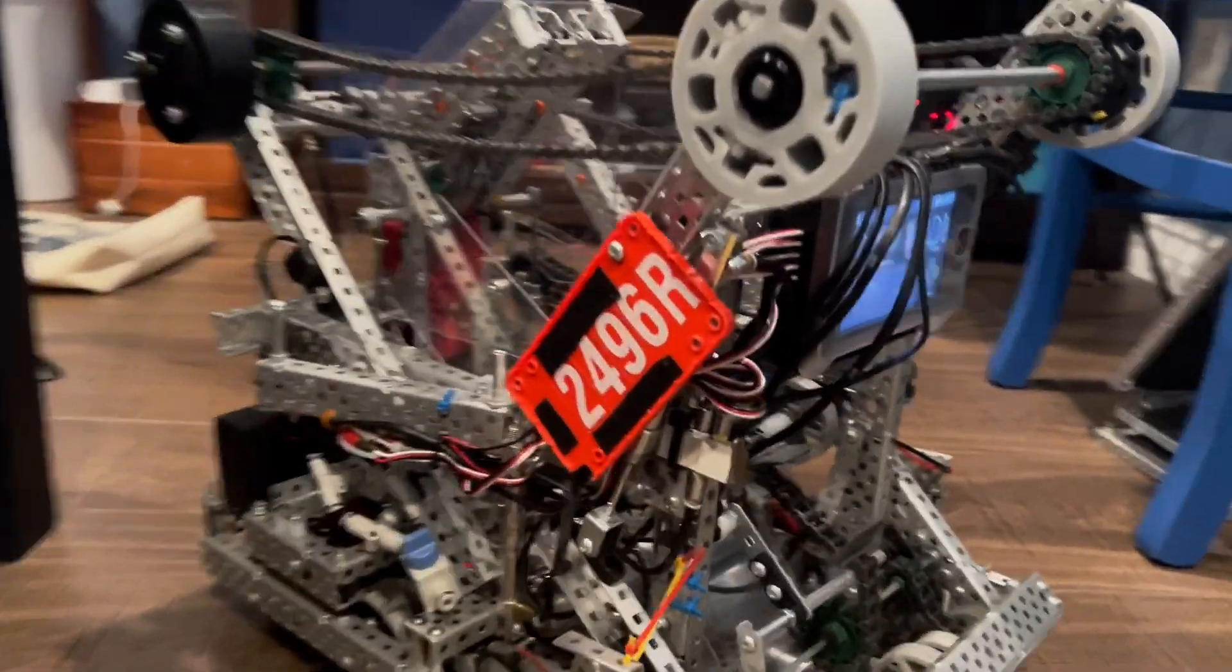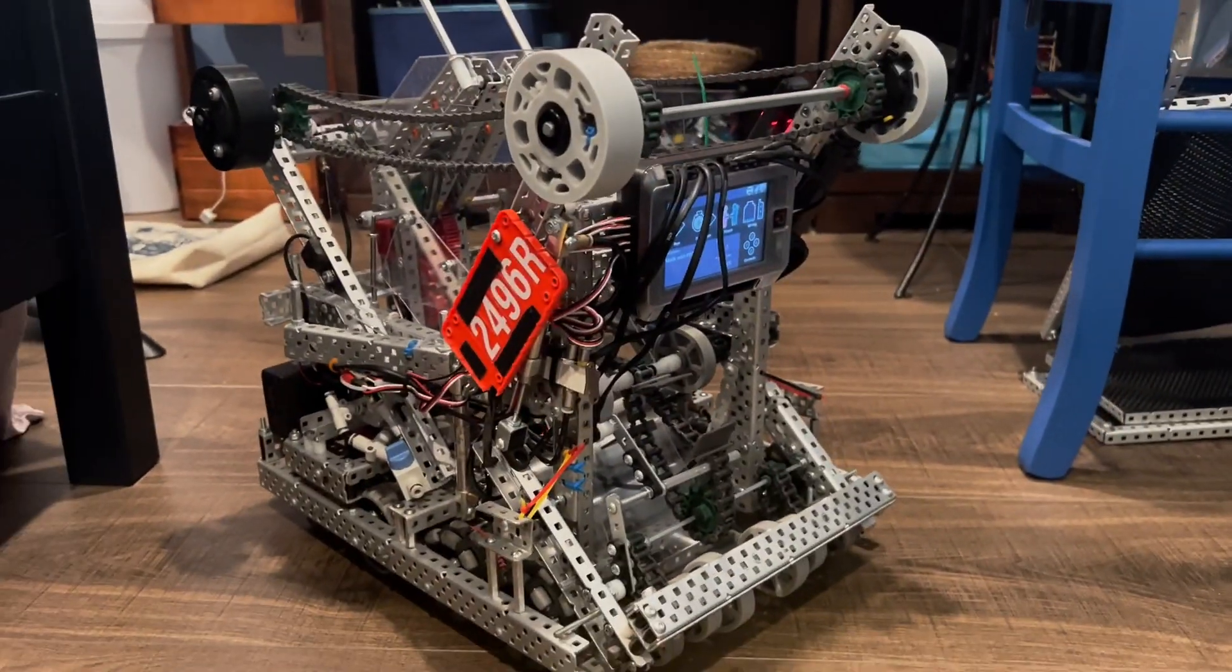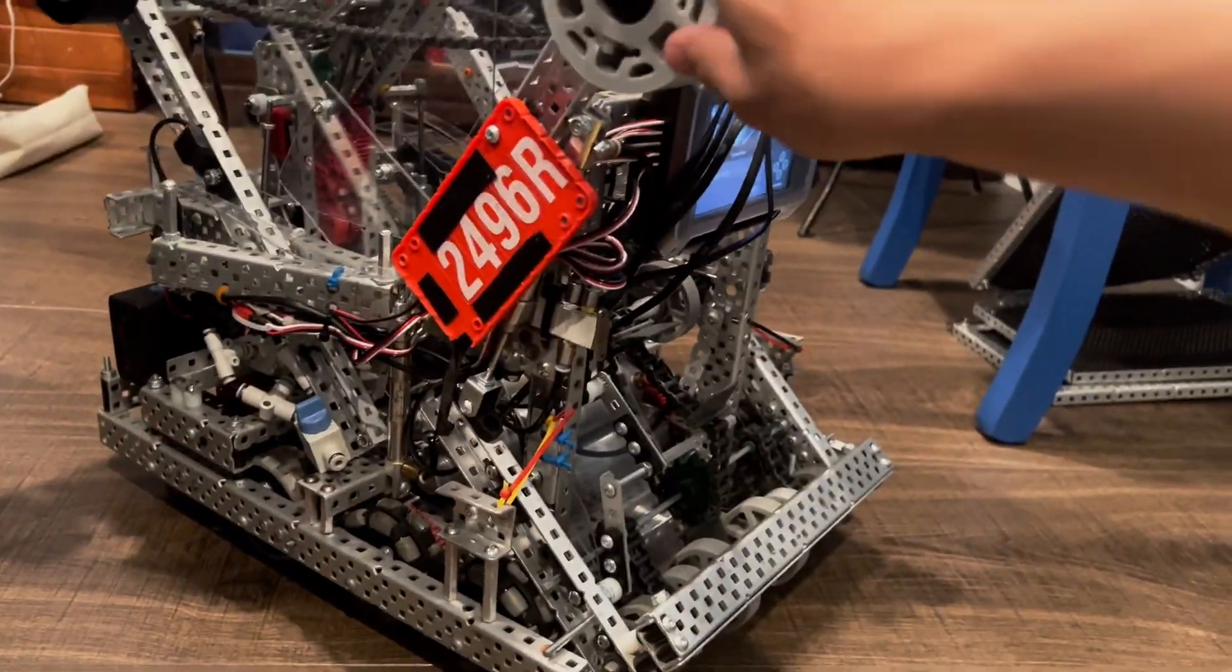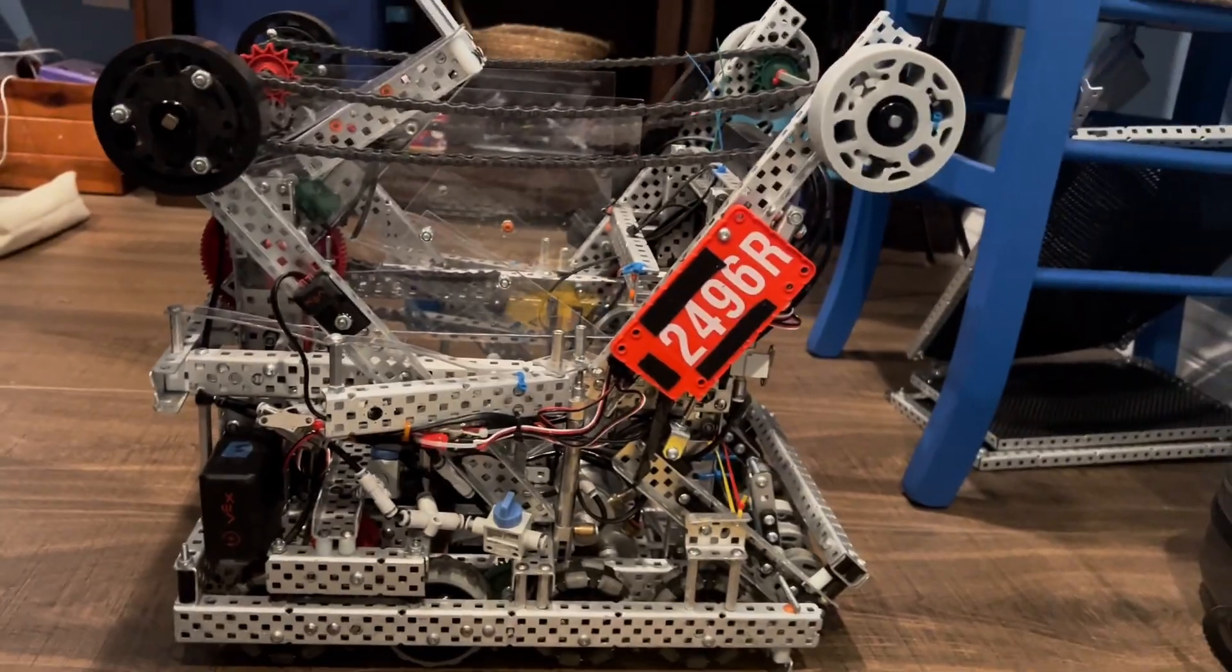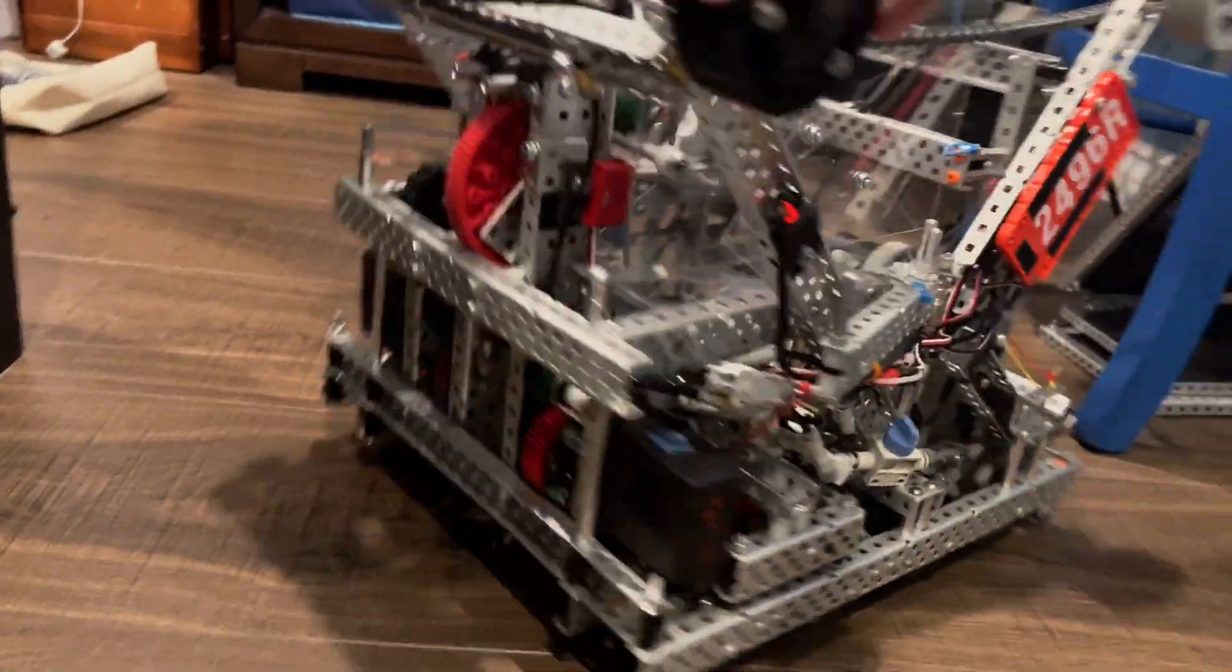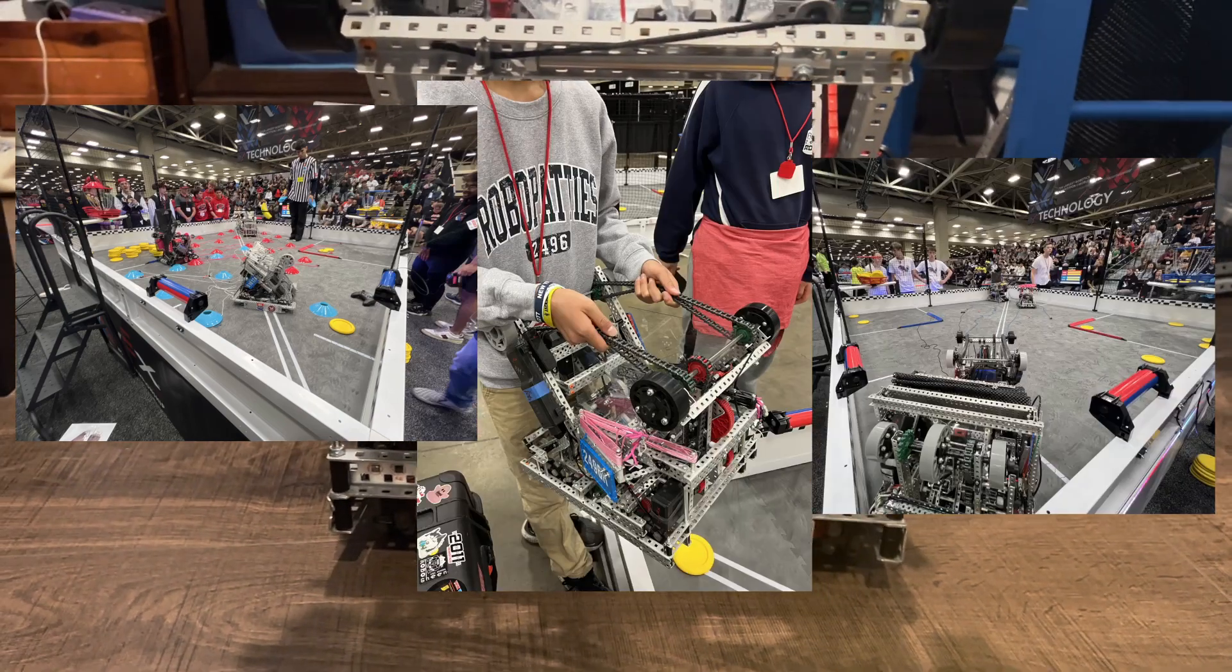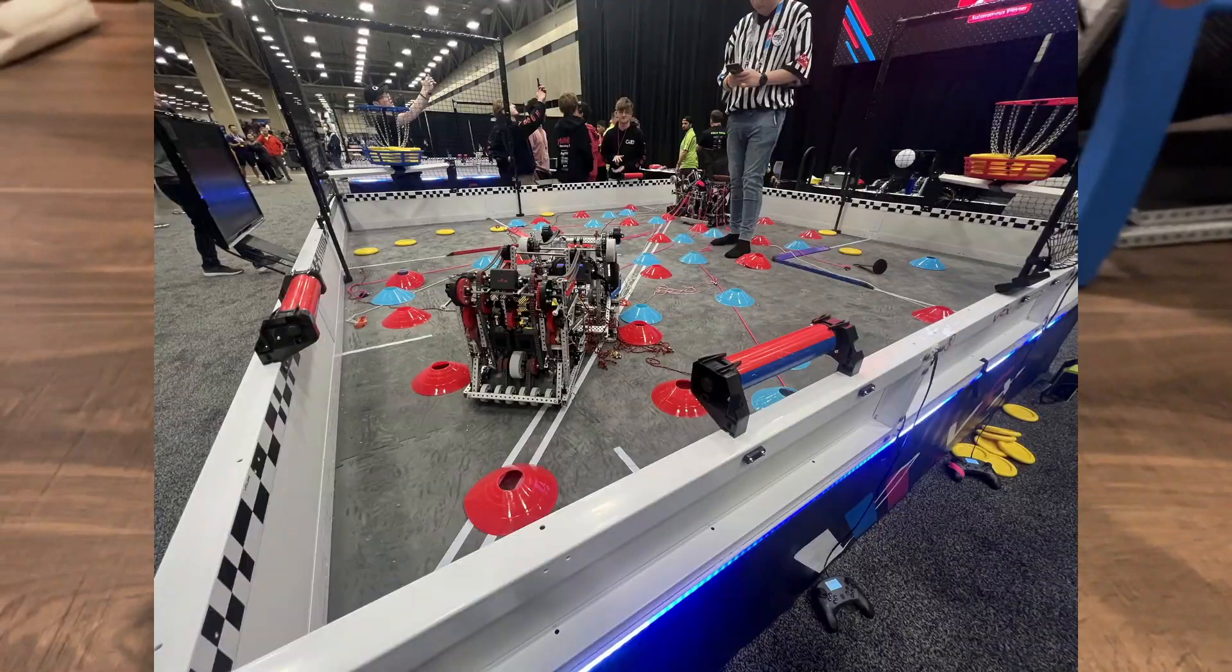Hi, this is KJ from Team 2496R. This is our Worlds Robot for VEX spin-up and I just wanted to make a quick explanation video to show off some of the unique and cool features of this robot. This robot did pretty well at Worlds. We ended up making division finalists and lost to the eventual world champions.